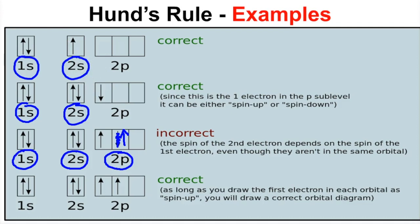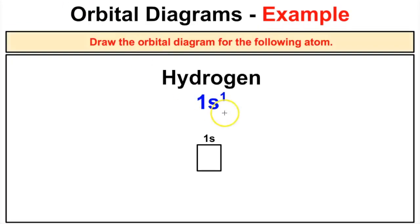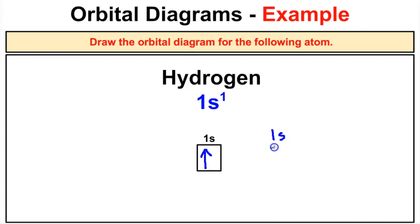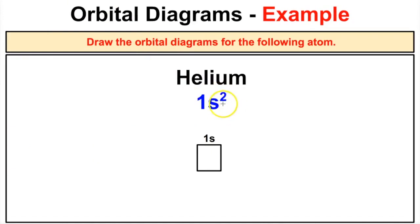Now let's do some orbital diagrams of our own — pause the video and try these yourself. For hydrogen: there is only one s orbital, so it gets one box, with one electron spinning in a certain direction. Either an up or down arrow is acceptable for hydrogen. For helium: helium has two electrons that fill the 1s orbital, one spinning one way and the other spinning the opposite way.